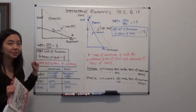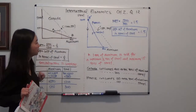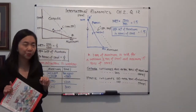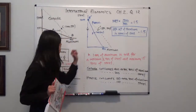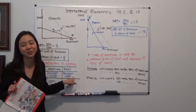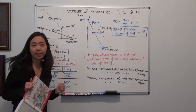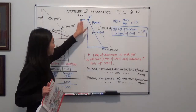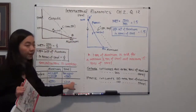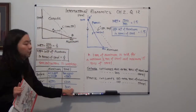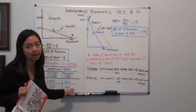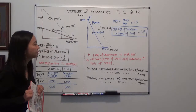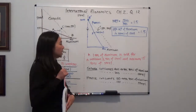For steel: before specialization, Canada produced 300 tons and France produced 600 tons, totaling 900 tons. After specialization, France specializes on steel and produces 1200 tons. So we get 300 extra tons of steel after specialization, because 1200 minus 900 equals 300. Specialization is beneficial.